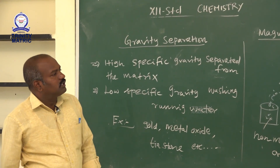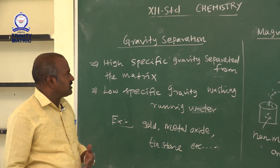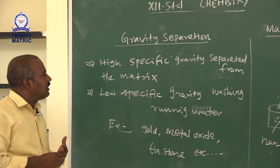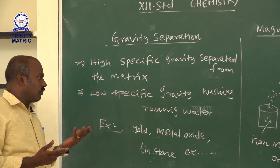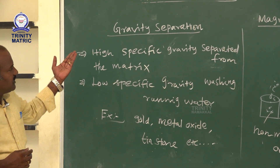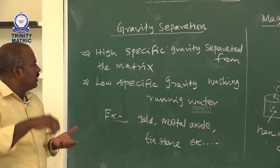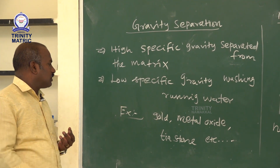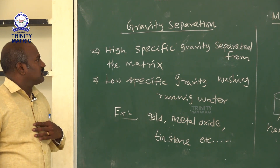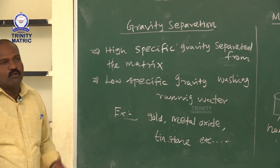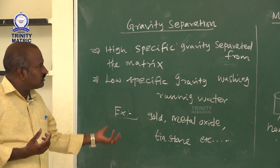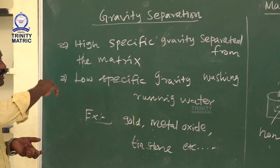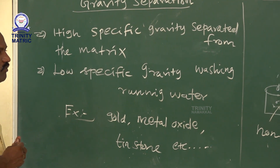The first method of concentration of ore is gravity separation. In gravity separation, the ore with high specific gravity is separated from the matrix. The powdered ore is placed in running water: weighted particles settle down, while weightless particles are carried away by the running water. This method is used for gold, metal oxides, and tin stone. It works by the influence of gravitational force — weighted ore particles settle while weightless gangue particles are carried away.